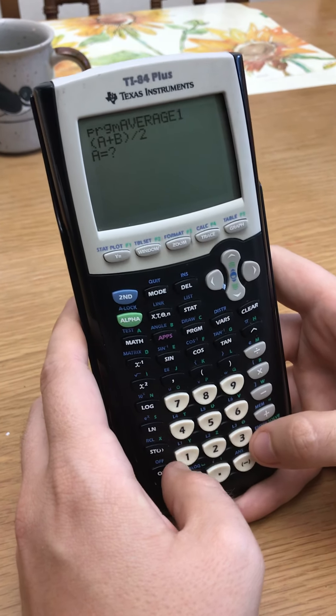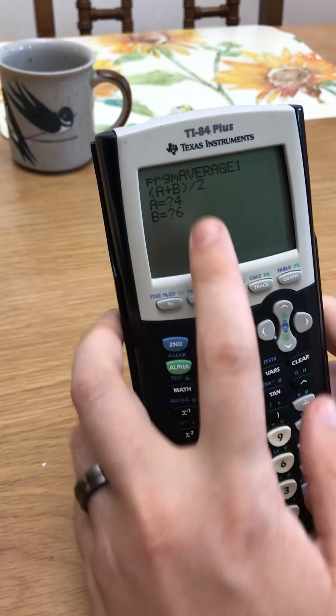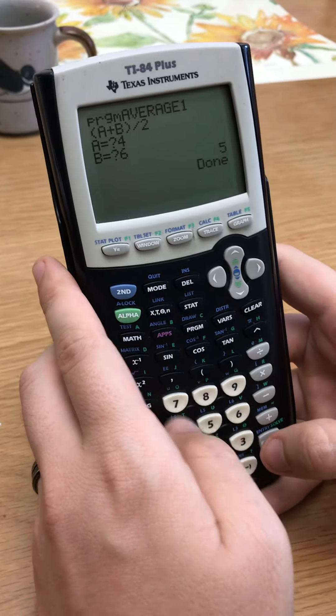So let's say I want to find the average of, I don't know, four and six. Because that would be five. Pretty easy to find out. Average of four and six. Boom. Five. And then we're done.